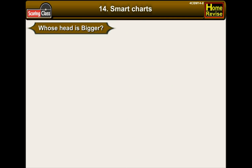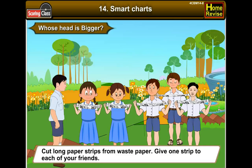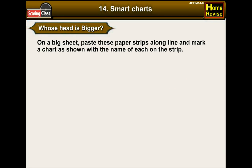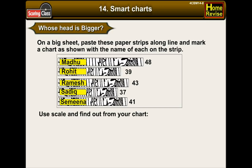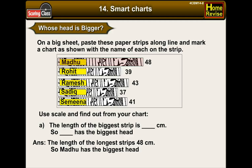Whose head is bigger? Cut long paper strips from waste paper. Give one strip to each of your friends. Put the paper strip around your head and tear off the extra strip. On a big sheet, paste these strips along a line and mark a chart with the name of each person on their strip. Use a scale to find out: the length of the biggest strip is 48 centimetres, so Madhu has the biggest head.